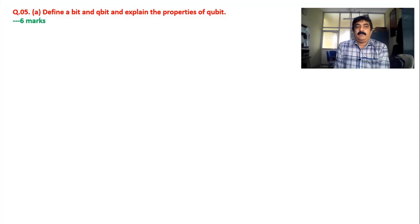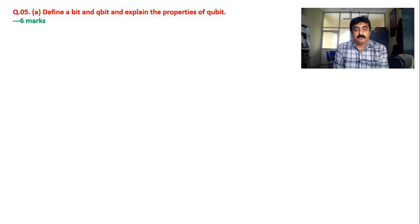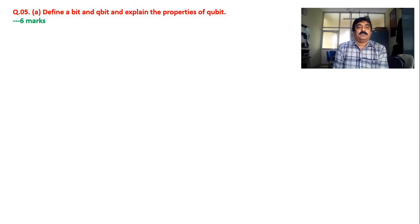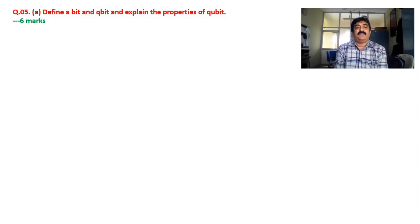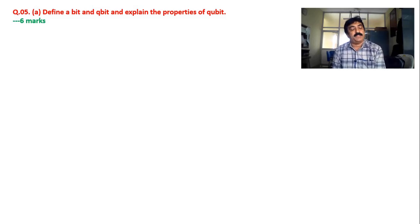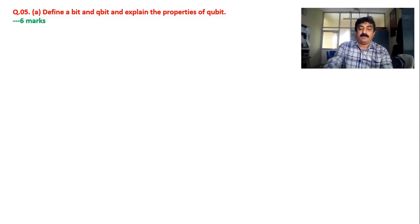Good morning dear students, welcome back. This is module number 3, paper number 2 for engineering physics, CSE stream. Question number 5a: define a bit and a qubit, and explain the properties of qubit — the differences and definitions.